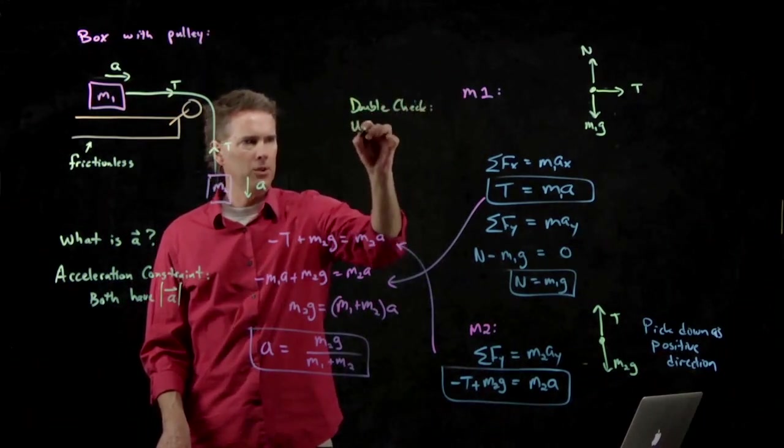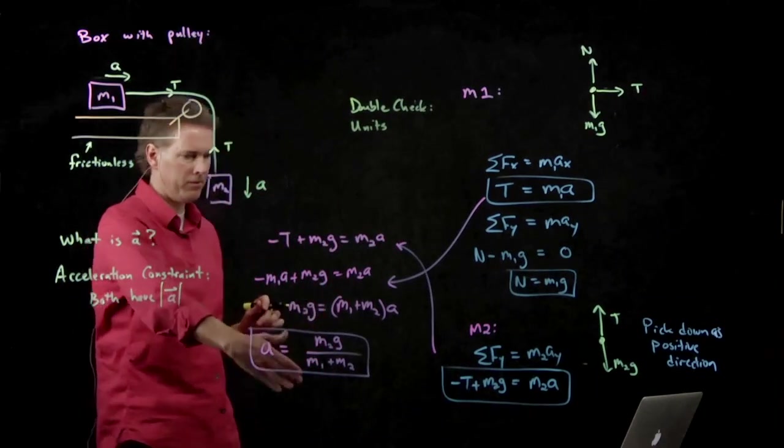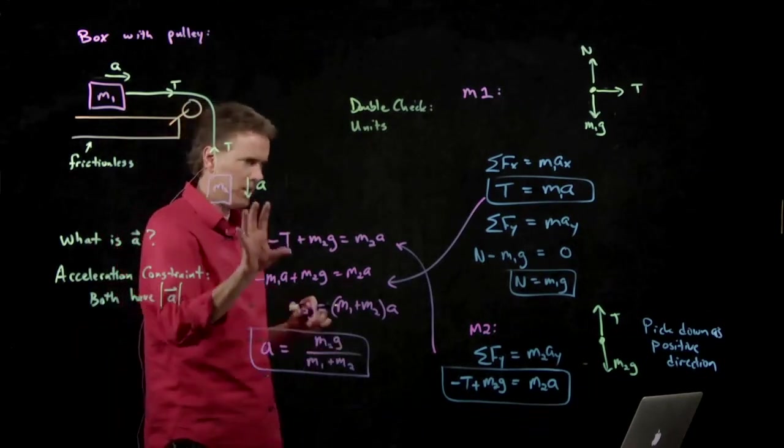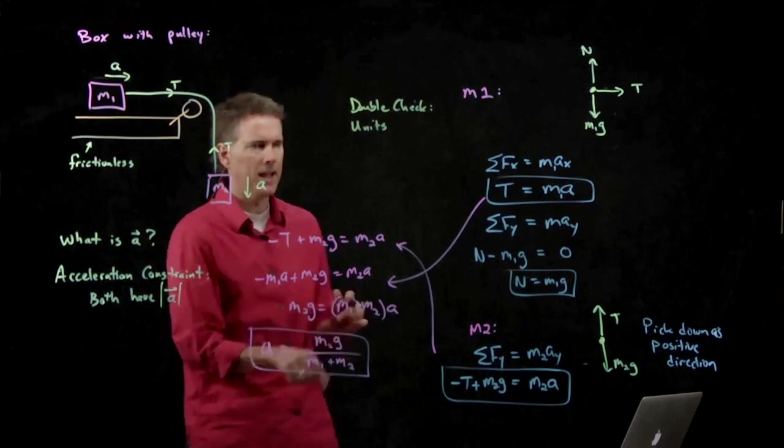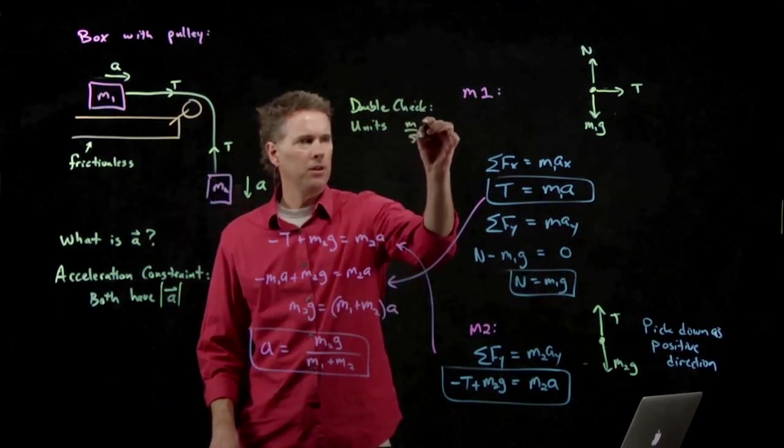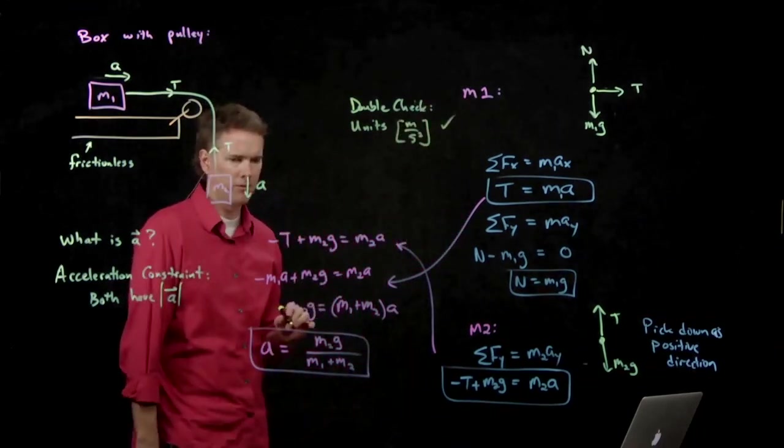We have to double check the units and make sure they work out. This is why we keep all the variables to the end. M on the top is going to cancel with M on the bottom. Kilograms goes away. And we're just going to end up with units of G, which is, of course, meters per second squared. And we like that for acceleration. So that's good.